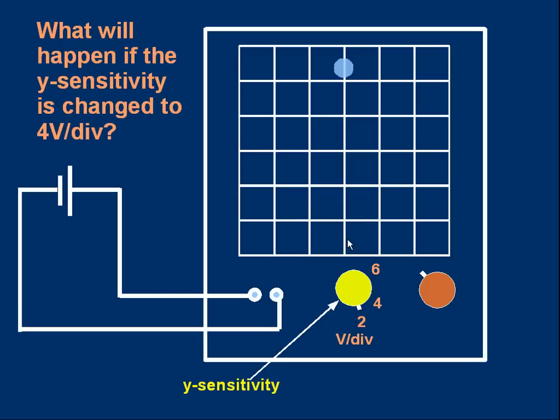Here's another question. Take a look at the setup here. The problem is this. What will happen if the Y sensitivity is changed to 4 volts per division? So it's on 2 at the moment. I turn this little yellow knob anticlockwise so it's pointing at 4 volts per division. What do you think will happen to the spot? Again, pause the video. Try and work it out for yourself.